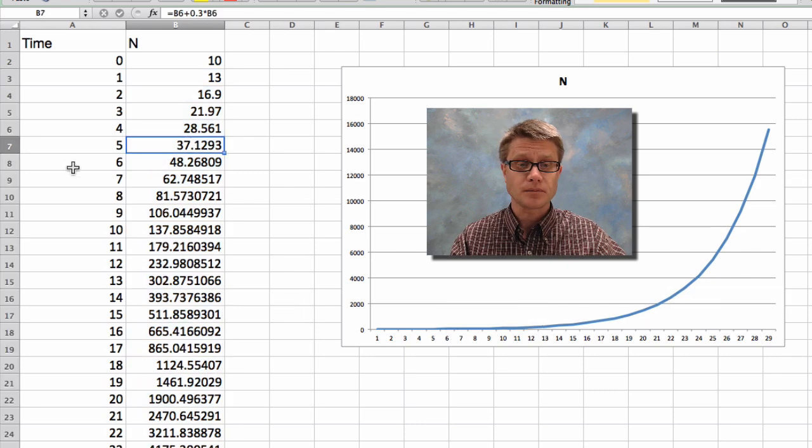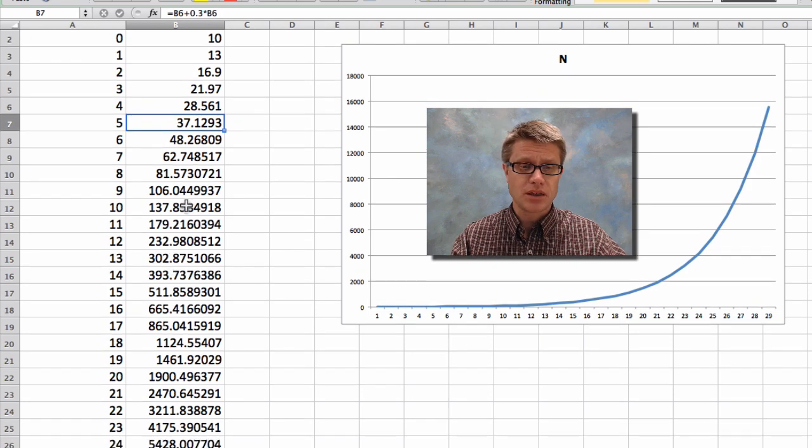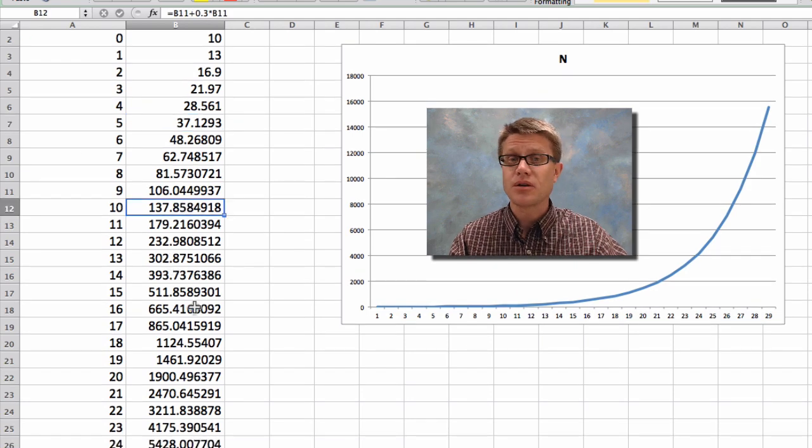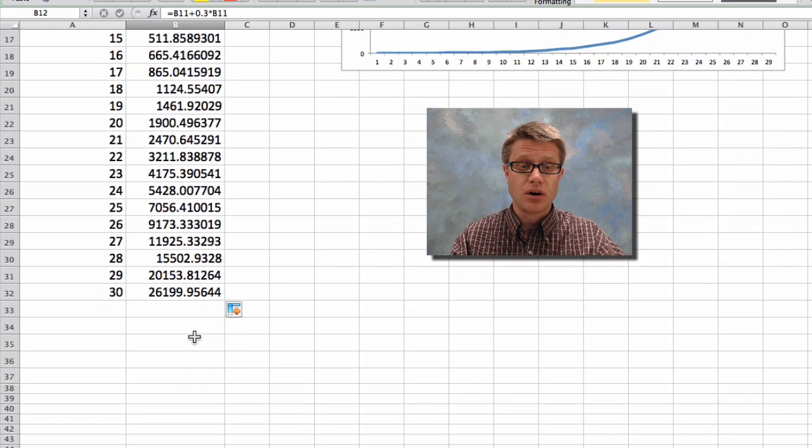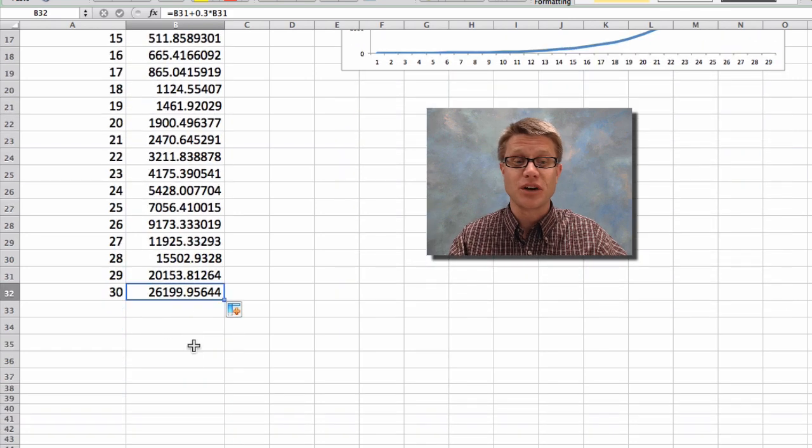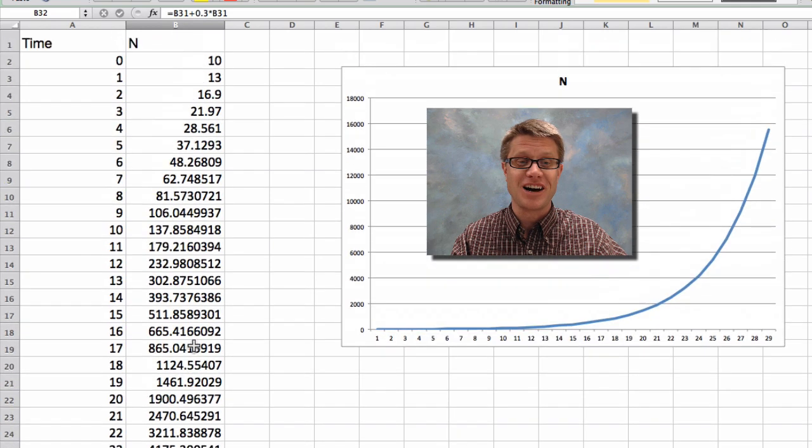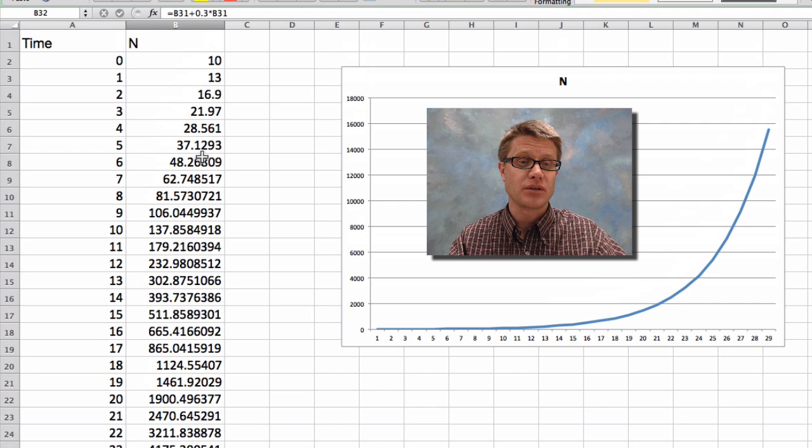And so now we could quickly answer those questions. At time 5 we should have around 37 rabbits. What was the next one? I think 10. We should have around 138 rabbits. And if we go all the way down here to time 30 we're going to have 26,199 rabbits. So that's a lot of rabbits really, really quickly. And so you can see how exponential growth takes off.